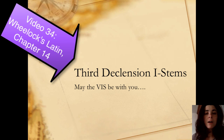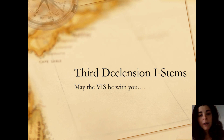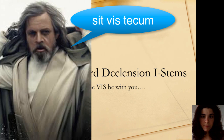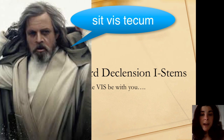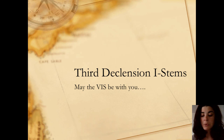Hello, ladies and welcome to A Course — Frequesima Corta, video 34. Today we're going to be talking about third declension i-stems, and of course the irregular noun VIS, which means force or power.